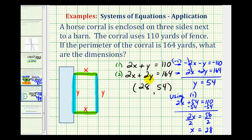So here's our solution, which means the length of this side of the corral is 54 yards. And this length here is 28 yards.